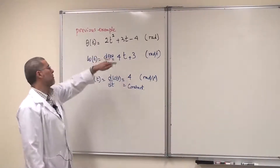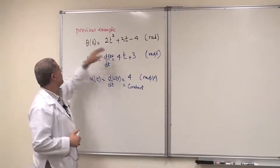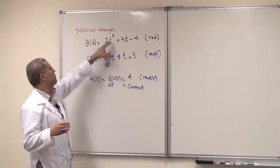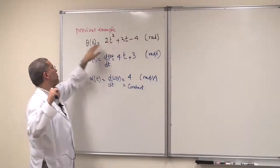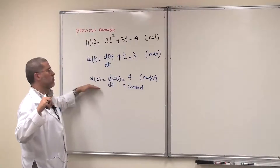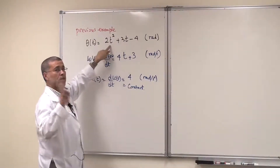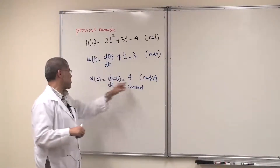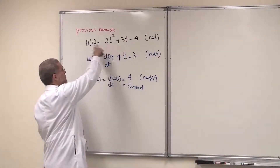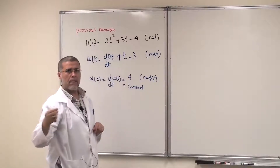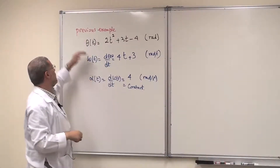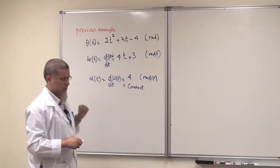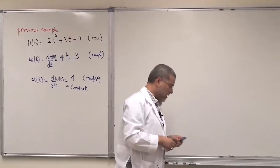This is a general rule: if the highest power in the angular position θ is 2, then your angular acceleration α will be constant. If the highest power is more than 2 — say 3 or 4 — then α will not be constant. If θ(t) is linear (power 1), then α = 0.